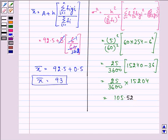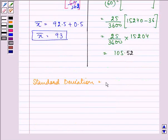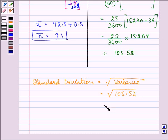Now we need to calculate standard deviation and that is under the root variance and that is under the root 105.52 and that is 10.27 approximately, right?